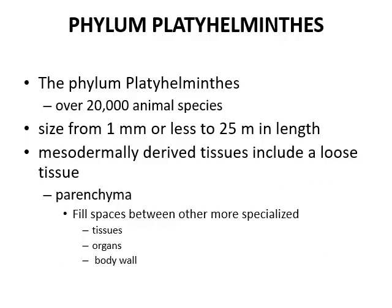The phylum Platyhelminthes has over 20,000 animal species ranging from one millimeter or less to 20 meters in length. Mesodermally derived tissues include loose connective tissue called parenchyma, which fills space between other more specialized tissues, organs, and body walls.